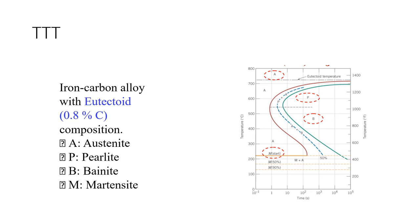In this diagram for an iron-carbon alloy with eutectoid composition of 0.8% carbon: A represents austenite, P represents pearlite, B represents bainite, and M represents martensite. The austenite region is at approximately 727°C, with the dashed horizontal line representing the austenite eutectoid temperature.